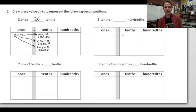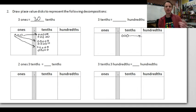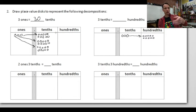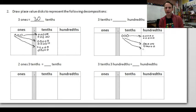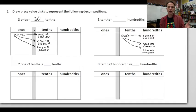Next: three tenths is how many hundredths? Each tenth is like a dime — and one dime equals ten pennies, so one tenth equals ten hundredths. Draw ten hundredths for each of the three tenths disks: ten, twenty, thirty. Three tenths equals thirty hundredths — three dimes equals thirty pennies.